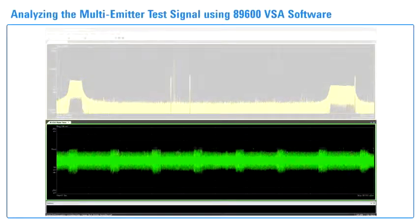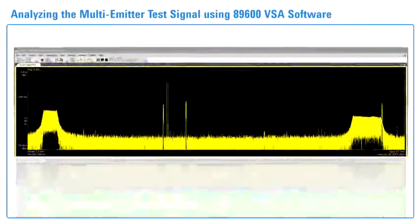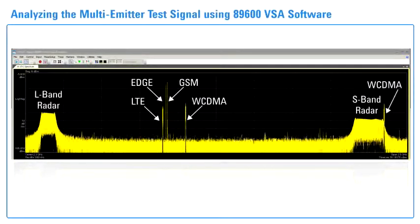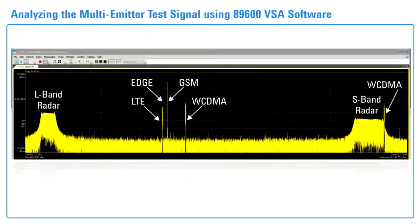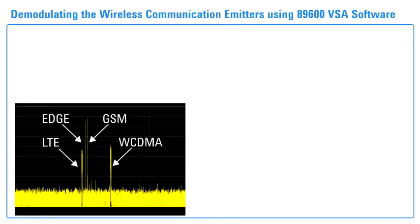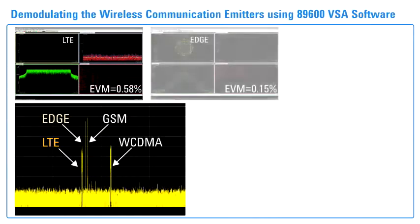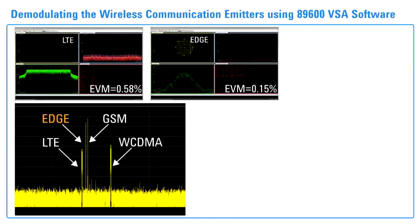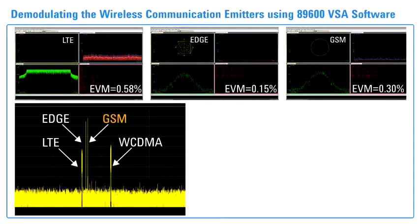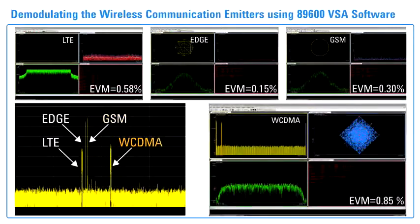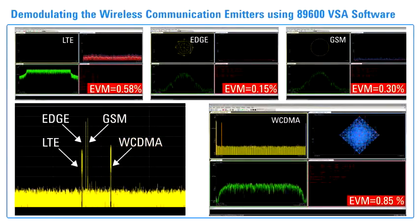Here, you see the composite time domain waveform, while the 2.5 GHz frequency spectrum shows the seven signals previously combined: L-band radar, LTE, EDGE, GSM, WCDMA, S-band radar, and the WCDMA interferer to the S-band radar. To illustrate the quality of this highly realistic signal, let's zoom into each of the wireless emitters and demodulate them with the PXA signal analyzer and 89600 VSA software. The residual EVM performance of each of the wireless emitters is low, showing the excellent signal fidelity of the wideband M8190A AWG.